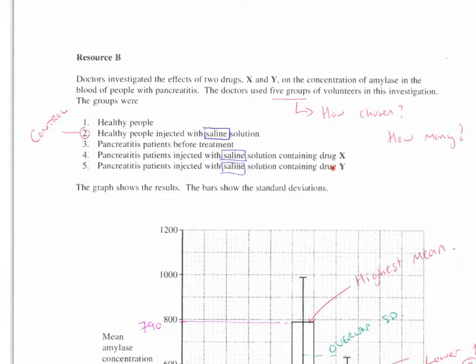We've got the two different drugs here, X and Y, and we notice it's a saline solution each time, so the control is also given exactly the same way, so it's injected, these are injected, and the saline solution as well. The only difference between the ones on the control is that these have got the two different drugs added as well. So the control allows us to prove whether the drugs have the effect or not.